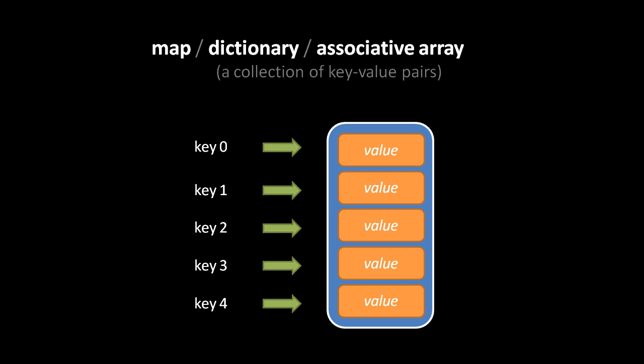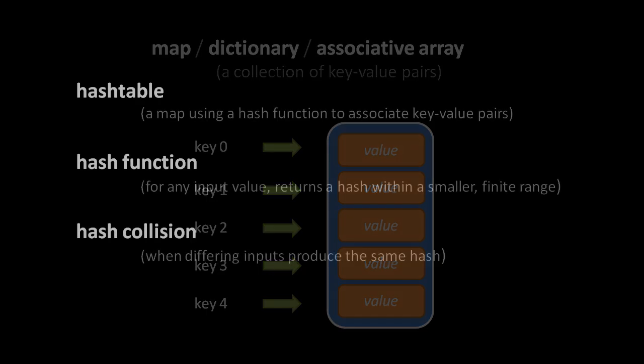While a much more efficient implementation, it is much more constrained. Ideally, what we want is a map with the efficiency or near efficiency of this array implementation, yet which allows us to use any possible key. The solution to this problem is what's called a hash table, which is a map that uses a hash function to associate the key-value pairs. What, though, is a hash function?